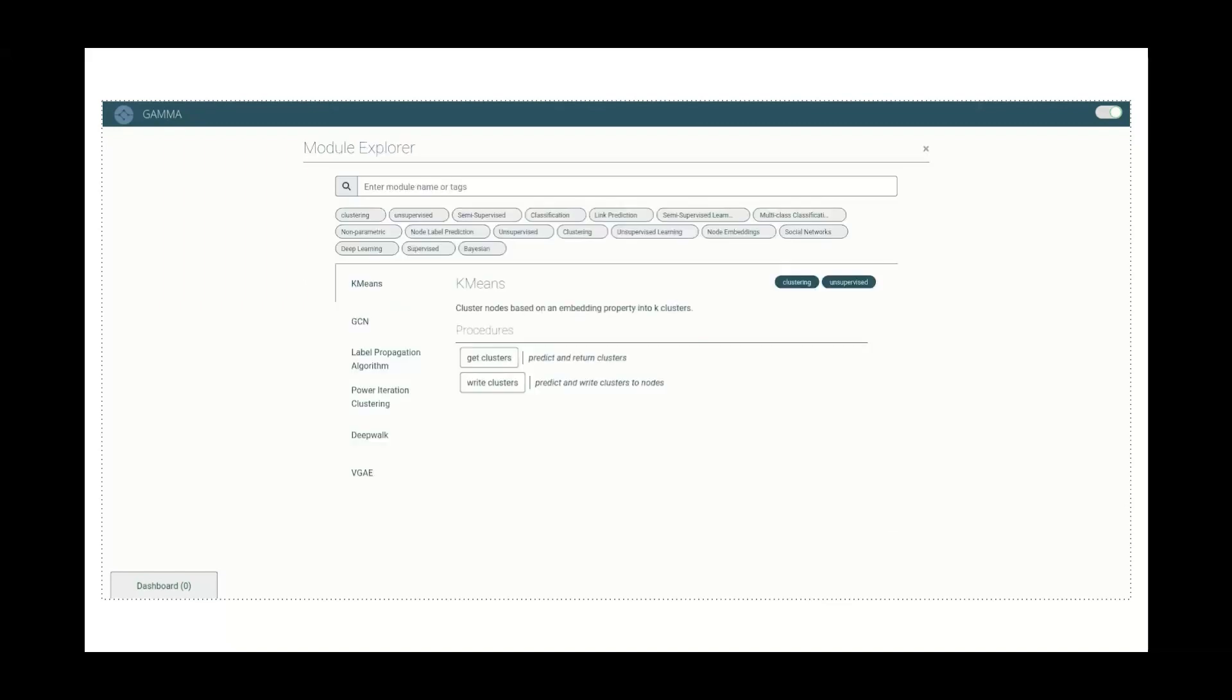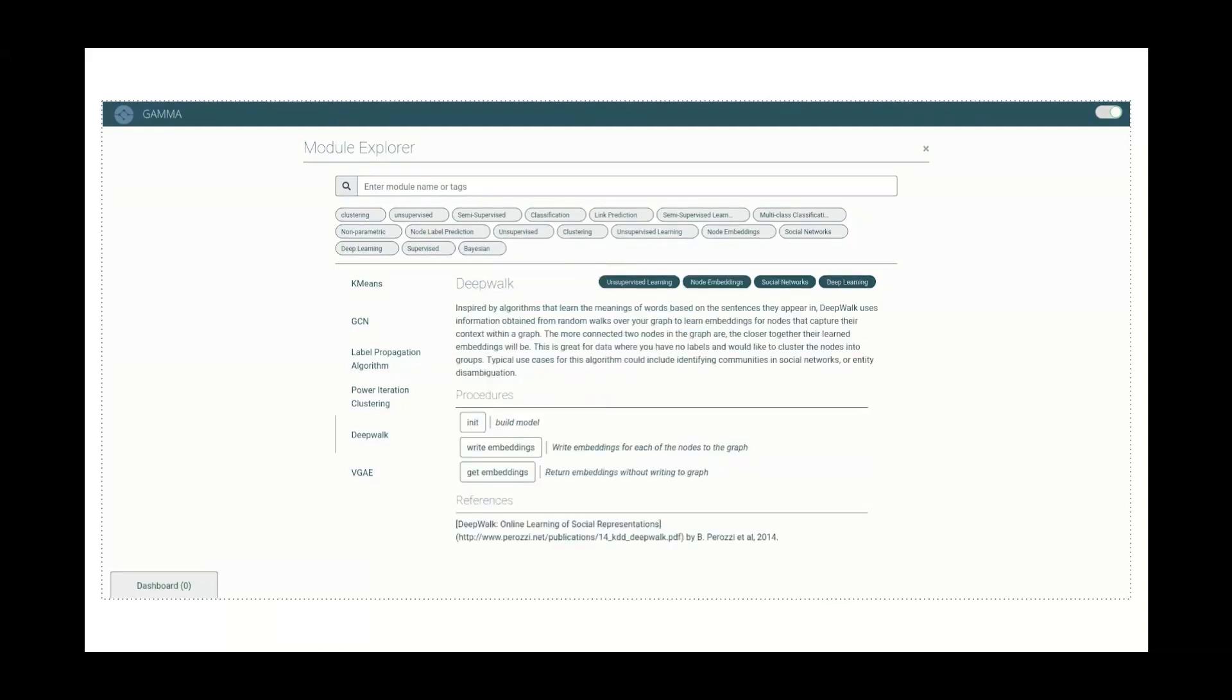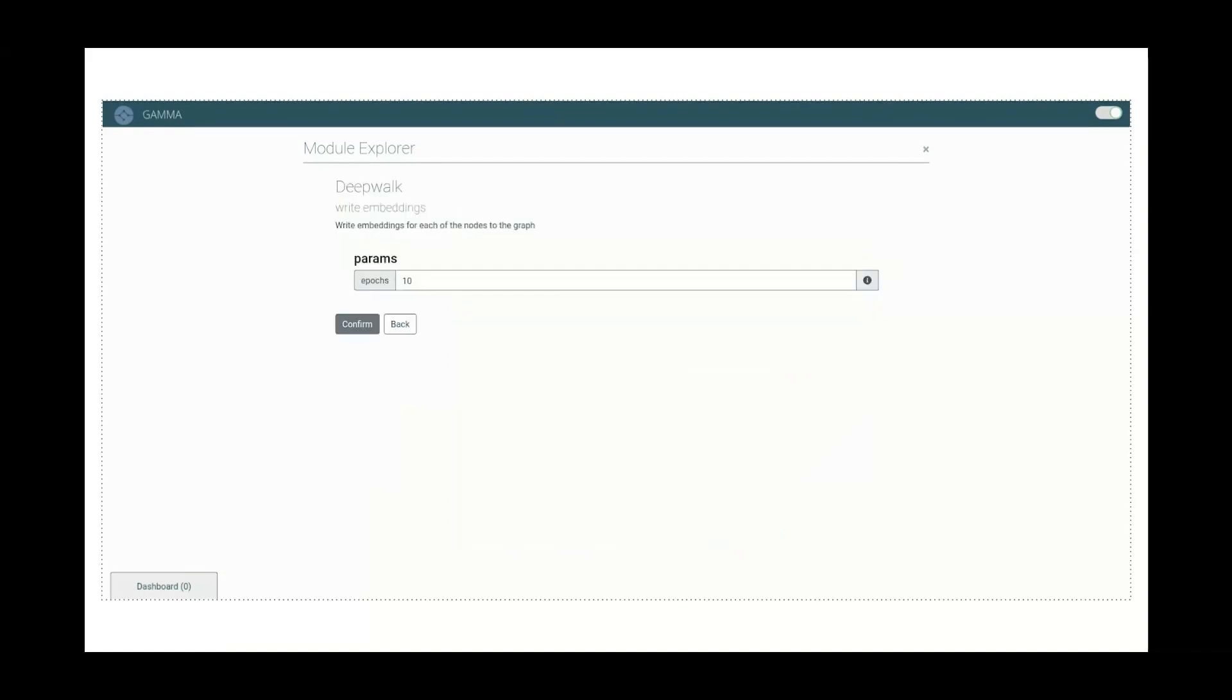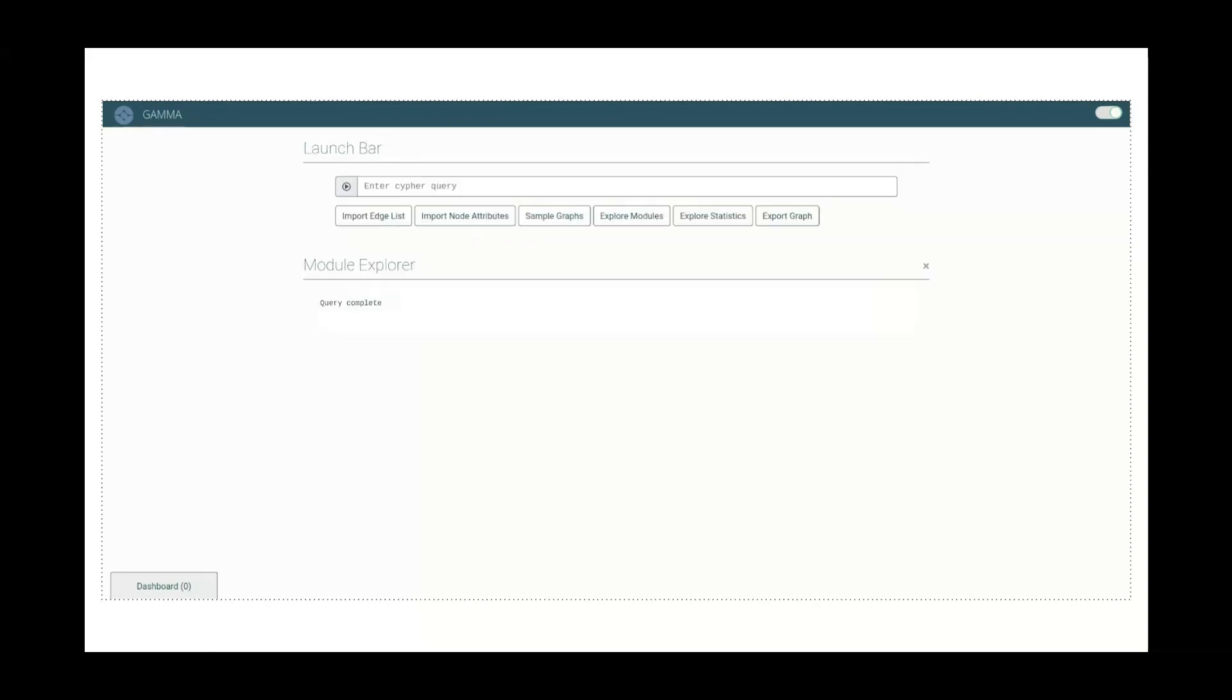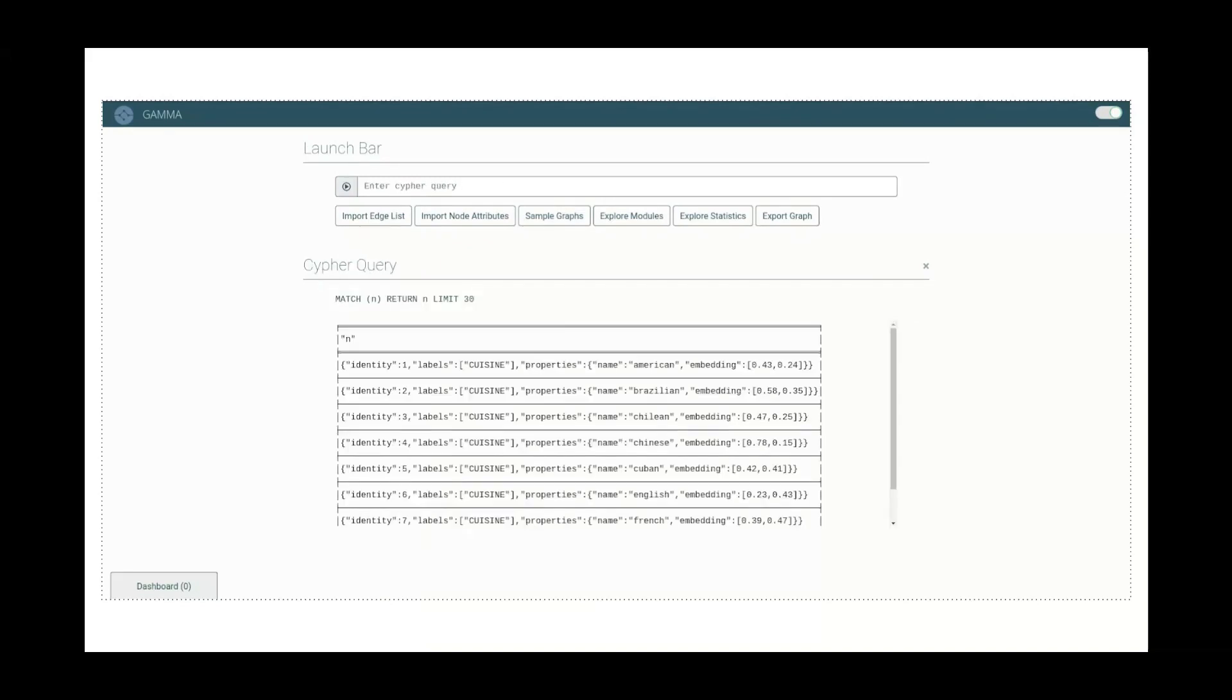So what we want to do now is we want to run our graph embedding algorithm. We're going to go onto the Explore Modules tab, and we have a list of some of the available algorithms. And then we're going to go to DeepWalk, which is the one we want. And we're going to write the embeddings onto the nodes themselves as properties. So we click Write Embeddings. And then on this screen here, we can set some parameters, but they often have defaults like it does here. And then we would click Confirm. The algorithm would run. And when it's complete, we can then run another query to look at the nodes again. And as you can see, the nodes now have an embedding property, which is a two-dimensional vector.